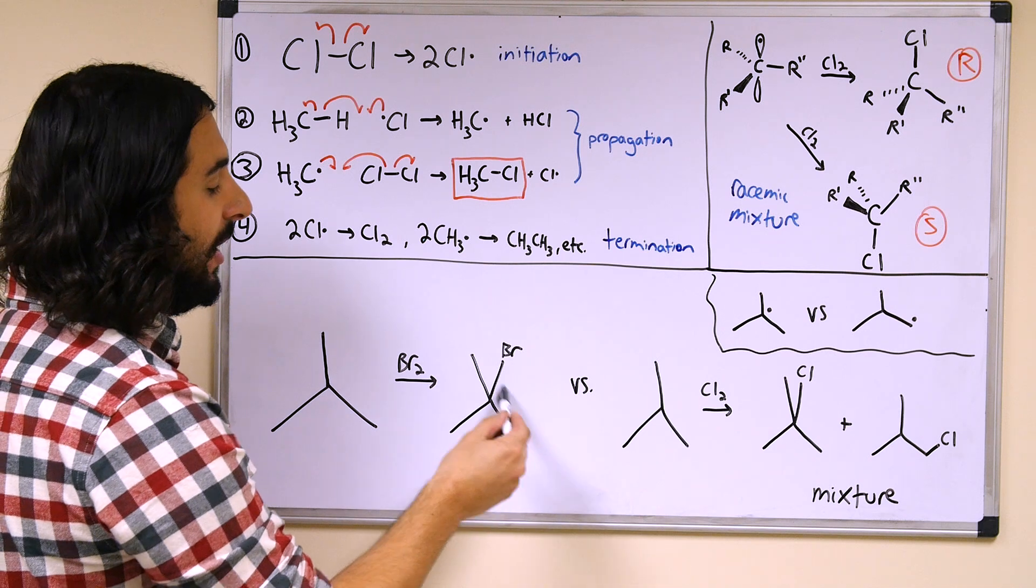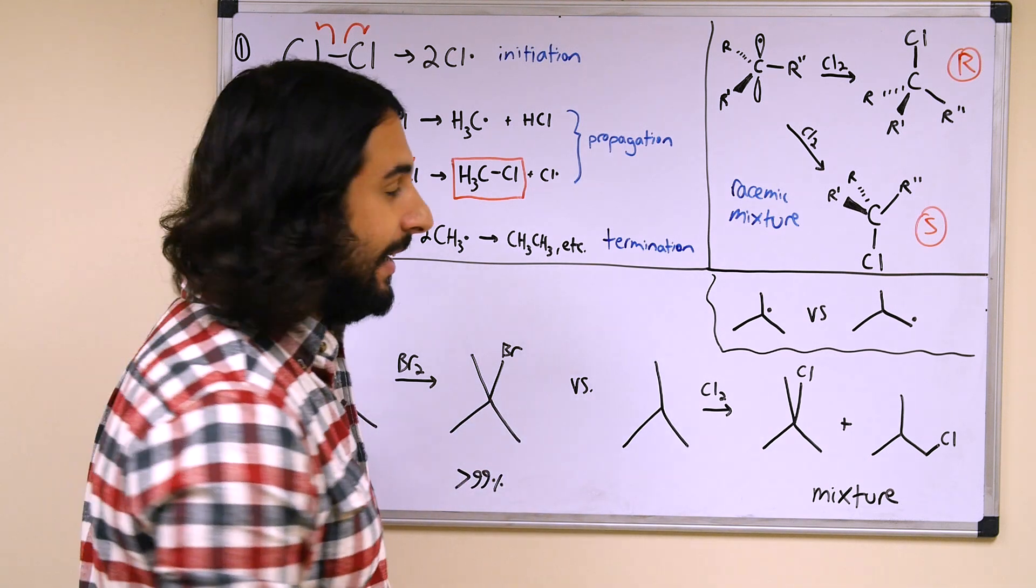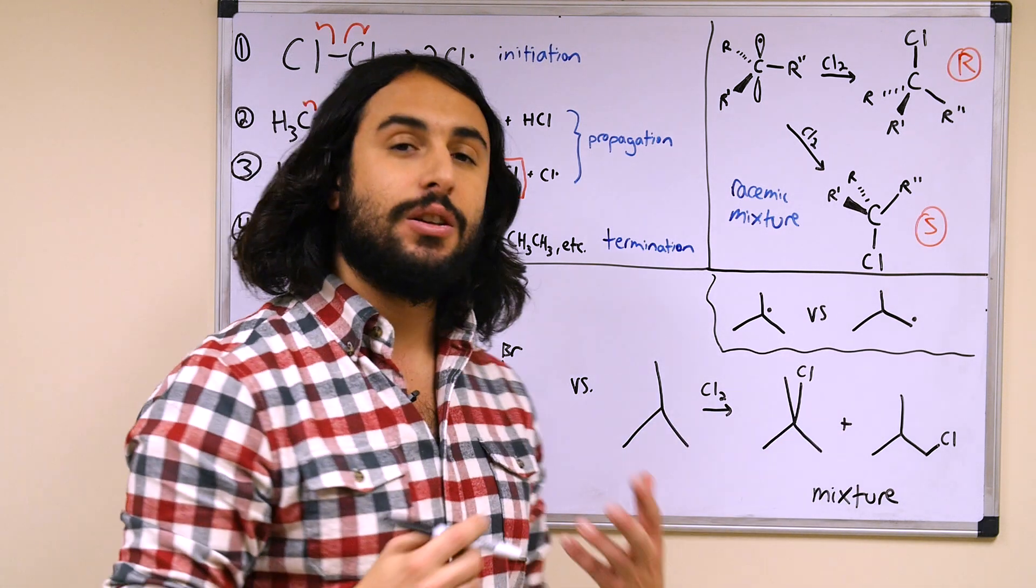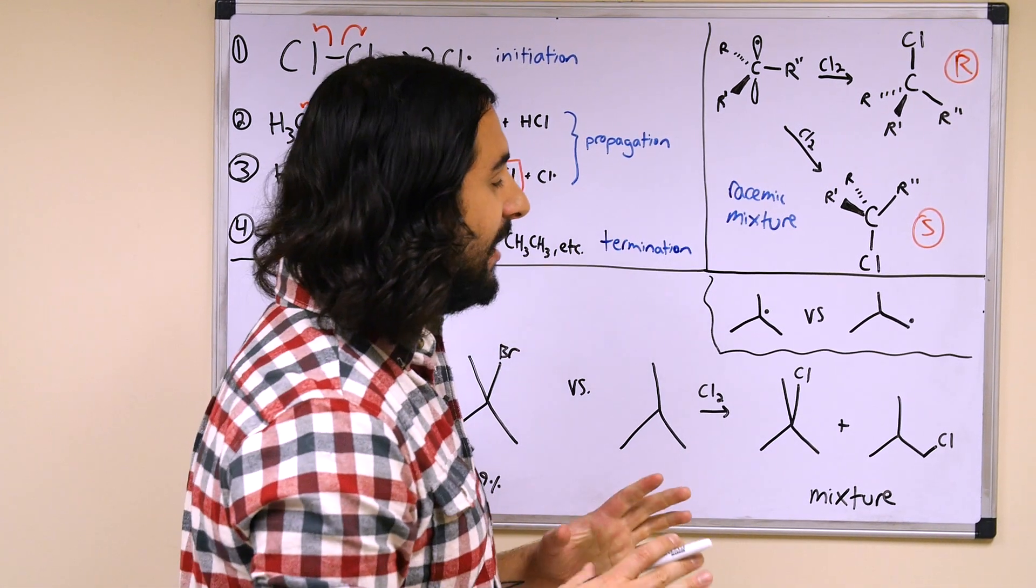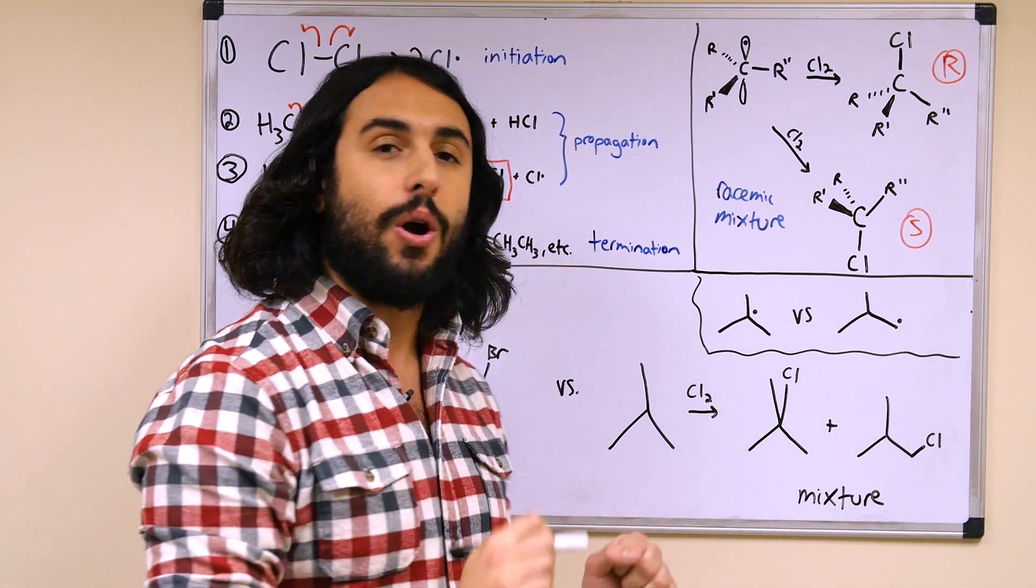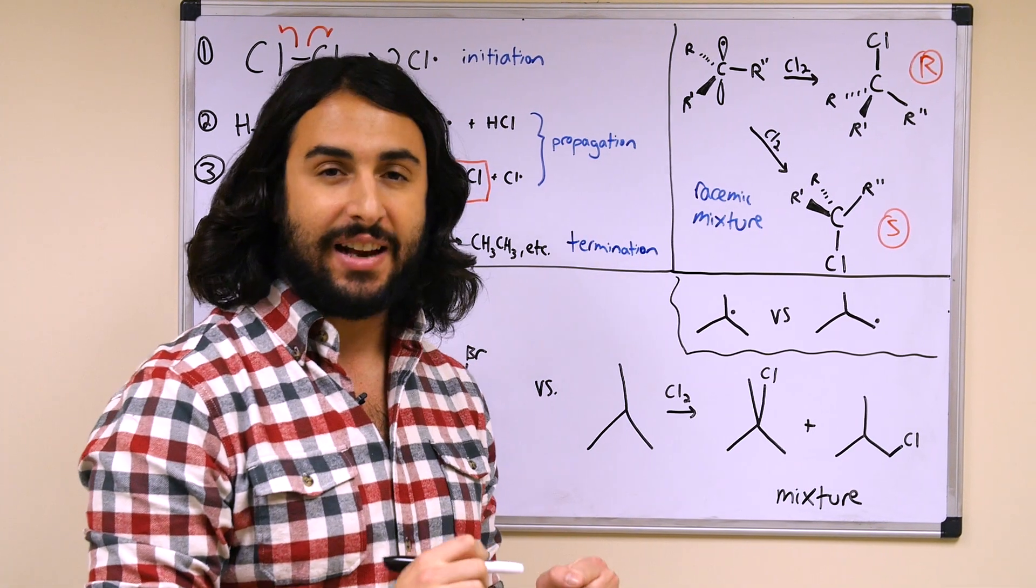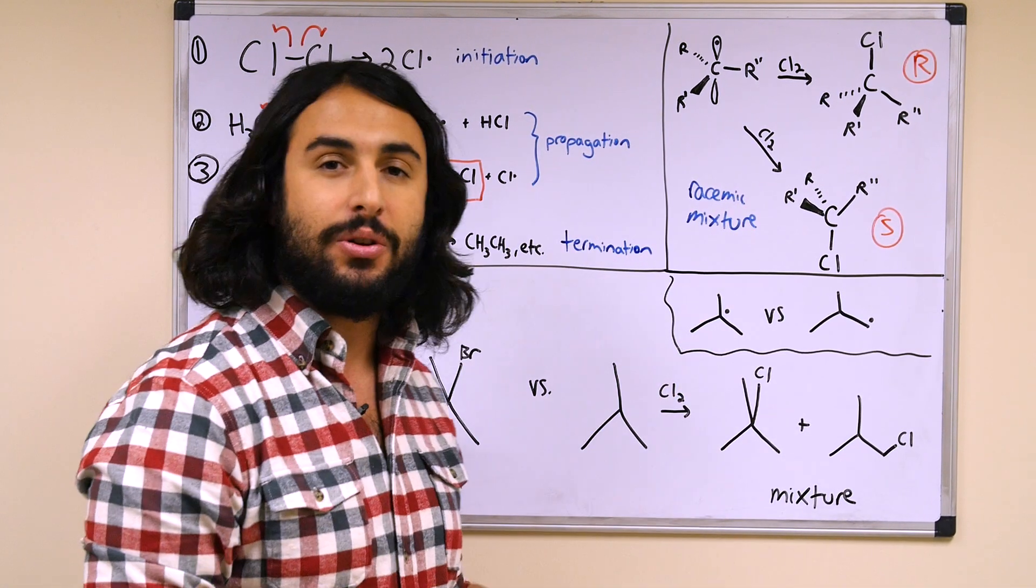Now with chlorine, because the chlorine radical is much less stable, it's going to go for whatever hydrogen it can get. It wants to satisfy the instability of being a radical.